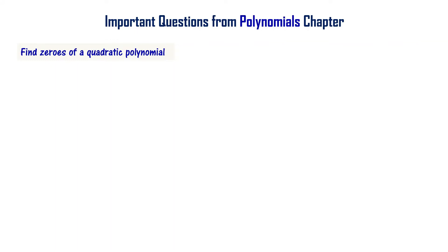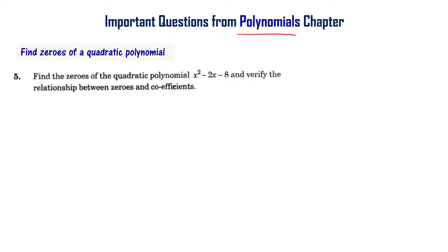Finding zeros of a quadratic polynomial is one of the important topics from the polynomials chapter. Find the zeros of quadratic polynomial x squared minus 2x minus 8 and verify the relationship between zeros and coefficients.